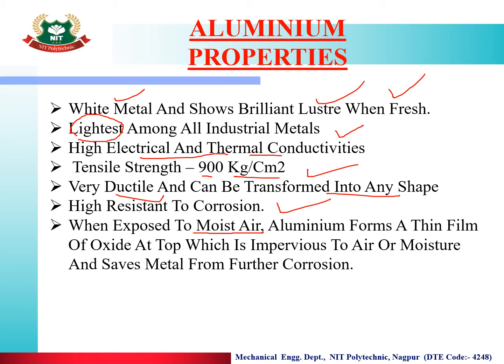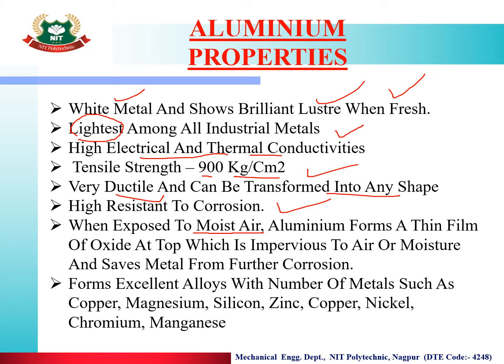Aluminium forms excellent alloys with a number of metals such as copper, magnesium, silicon, zinc, nickel, chromium and manganese. It can be alloyed with almost any metal, and aluminium is used to make a large variety of alloys.